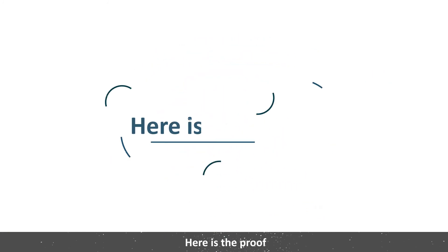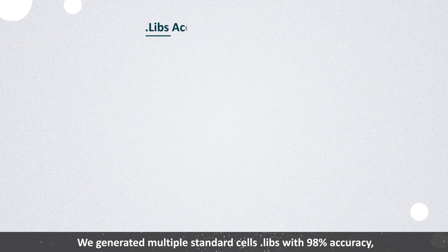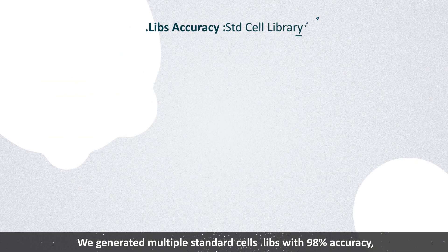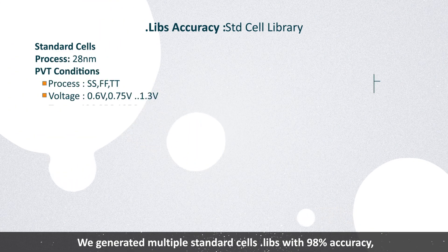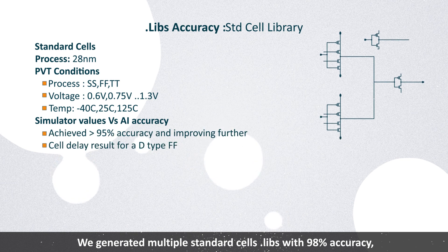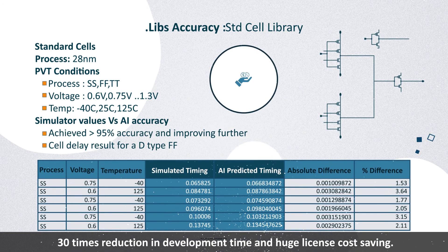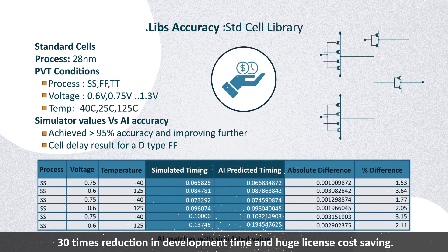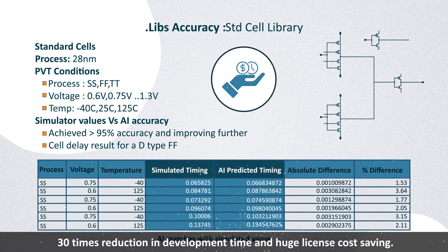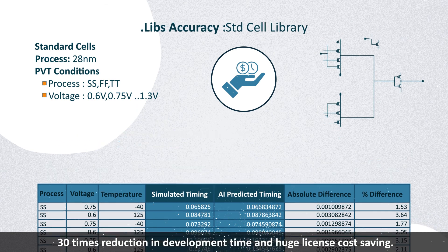Here's the proof. We generated multiple standard cell .libs with 98% accuracy, a 30 times reduction in development time, and huge license cost savings.